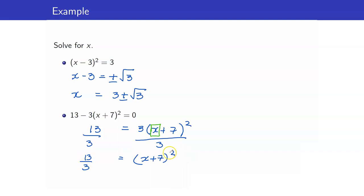We're now ready to get rid of the 2 here by getting the square root of both sides. Don't forget, plus or minus 13 over 3 is equal to x plus 7. We'll write it here.